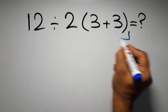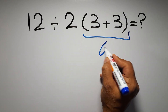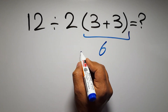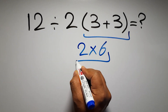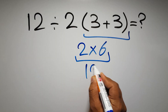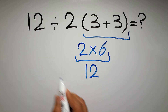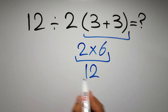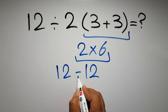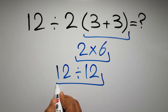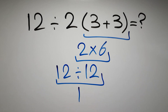3 plus 3 gives us 6, so 2 times 6 is just 12, and 12 divided by 12 gives us 1, but this answer is not correct.